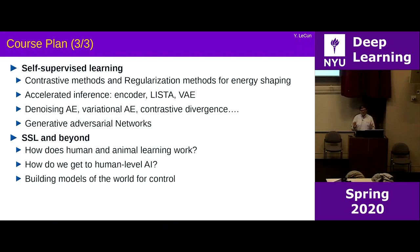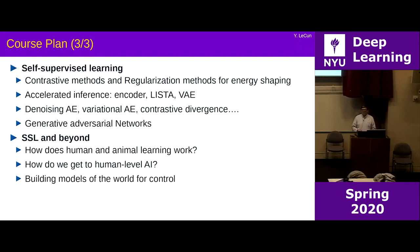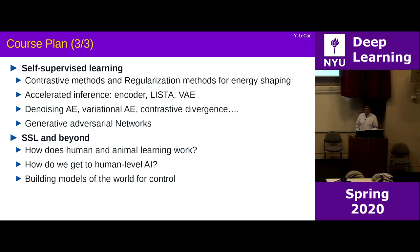Things like variational autoencoders, denoising autoencoders, and BERT — those transformer architectures trained for NLP through self-supervised learning — are special cases of denoising autoencoders. Many of these things can all be understood in the context of an energy-based approach. That also includes generative adversarial networks, which many of you have heard of.